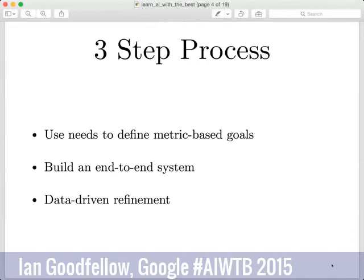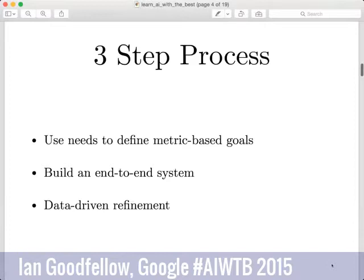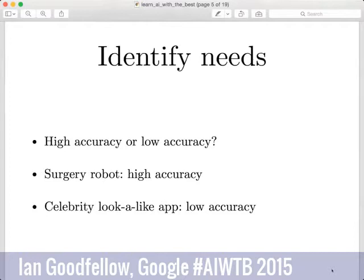Now I'll go through each of these steps in more detail. The first step is identifying the needs of your product or service and defining metric-based goals. One thing to think about is how much accuracy you actually need — everyone would like a perfect system, but that's usually extremely expensive or impossible. You want to initially plan for the lowest amount of accuracy that's actually usable in your application.